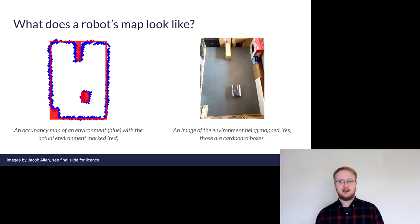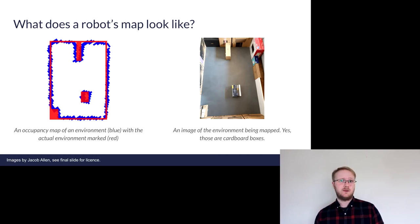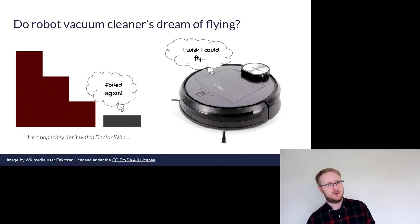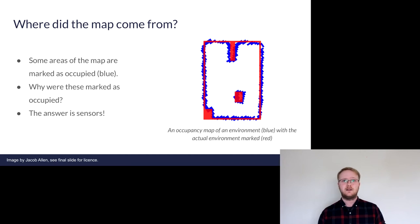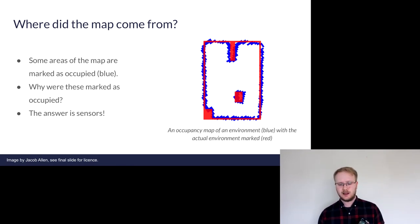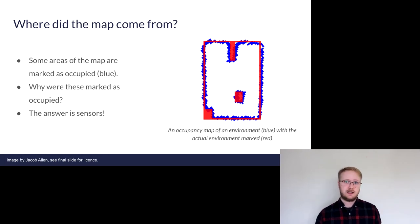One thing you may notice is that it's actually pretty granular — each individual section of maybe one by one centimetre has been categorised as containing an obstacle or not. This kind of map is simple but for the majority of tasks is all that's really required, and even just a 2D map is usually sufficient. Our robot vacuum cleaner is not going to be going up and down stairs, so it doesn't need any understanding of the third dimension. What makes these spaces marked as occupied or not? Well, there are a number of sensors, all of which we can talk about analogously by comparing them to our eyes.